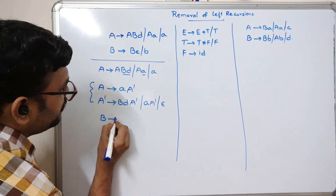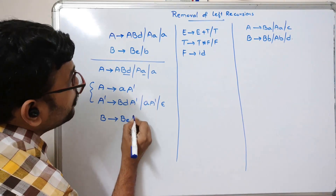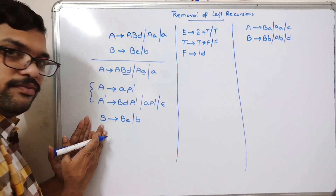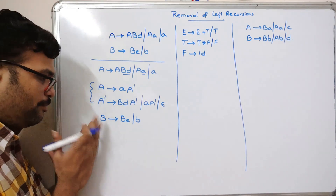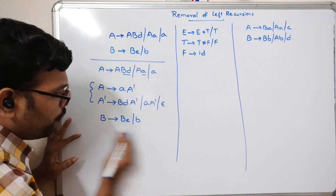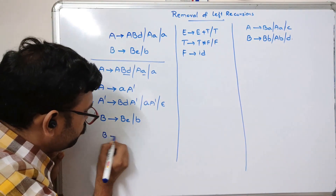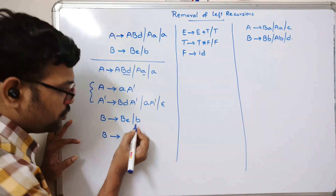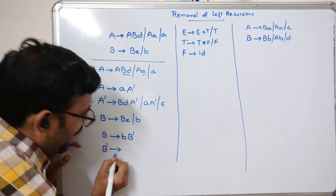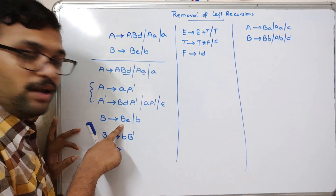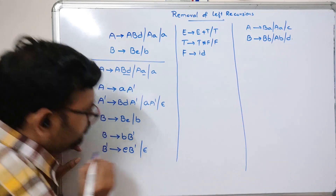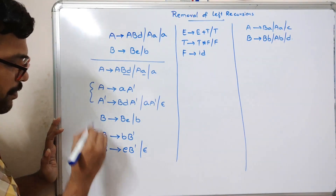For the second example, B → Be | AB: the non-terminal B appears leftmost on the right hand side, so it is left recursion. To remove it: write B → AB B' (the non-recursive part AB with B'), and B' → e B' | ε.